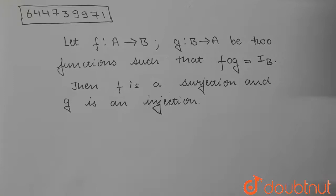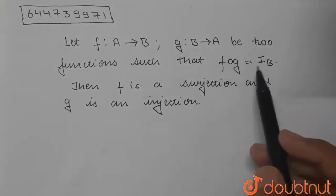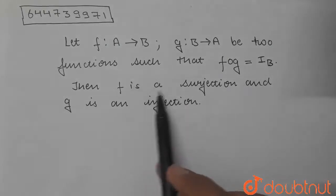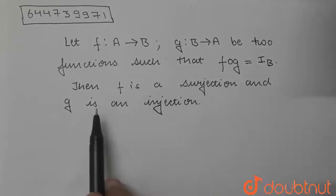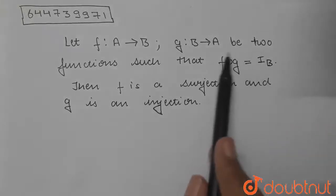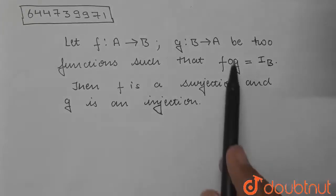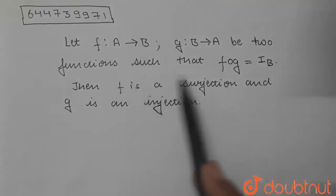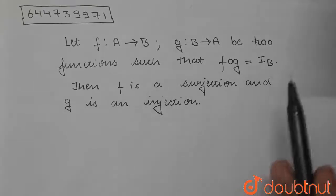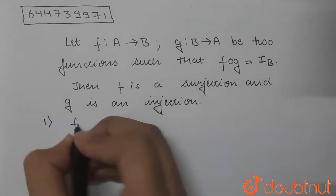We have f such that A tends to B, and g such that B tends to A — two functions such that fog is equal to iB. We have to prove that f is a surjection and g is an injection. So in this question we are given that fog equals iB, and we have to prove that f is a surjection and g is an injection.